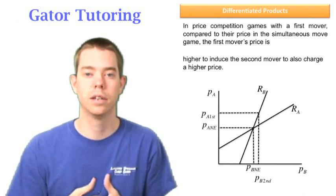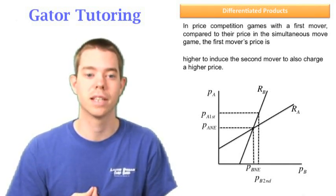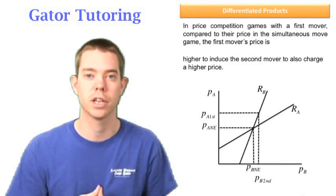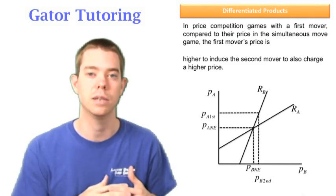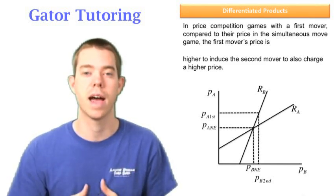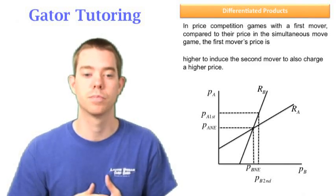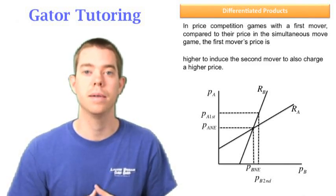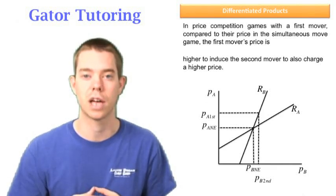B is better off because they can undercut A's price. They can see A's move, see what A did, and as the second mover, they have that advantage. B makes more profit. But A prefers there to be a first mover, so A is still happy compared to the simultaneous move game.